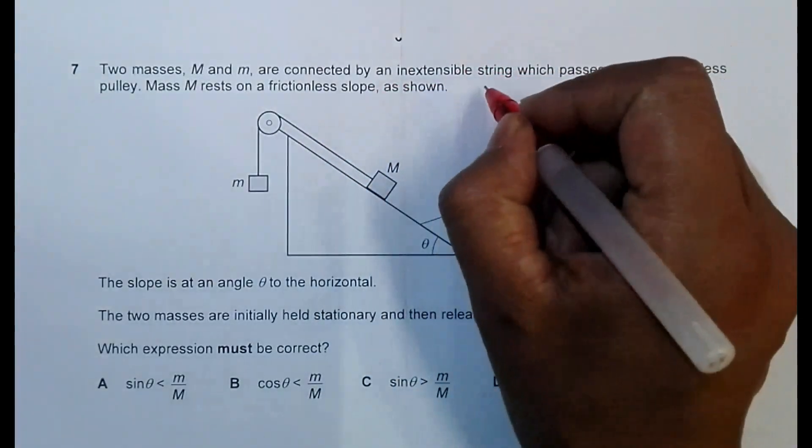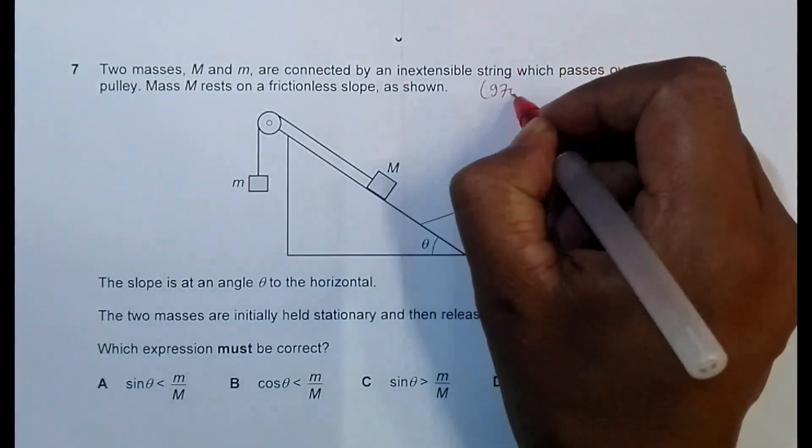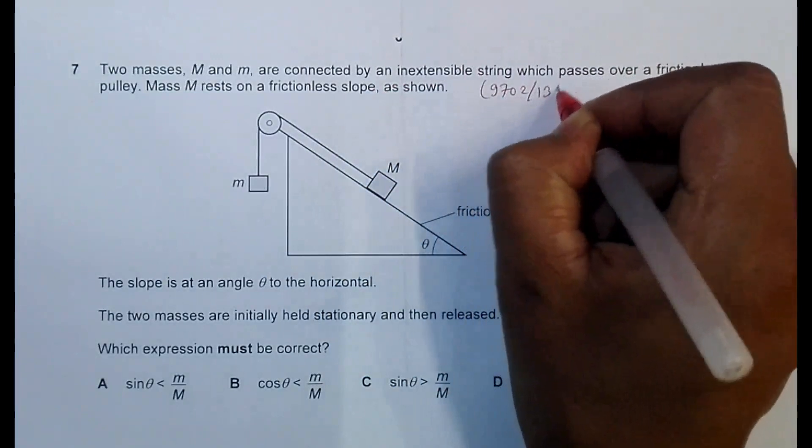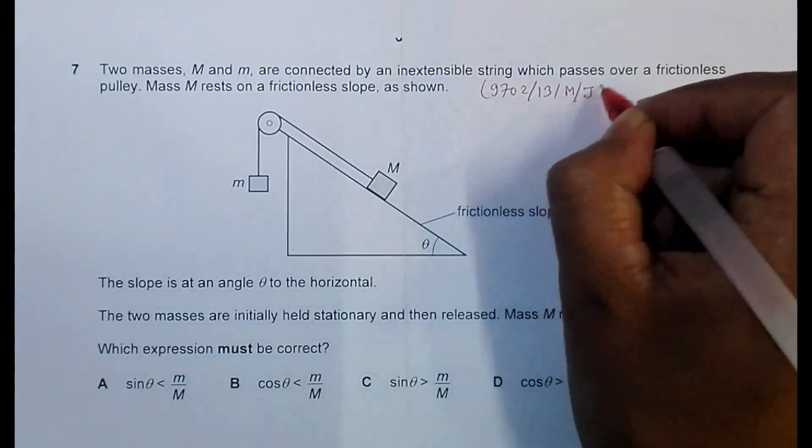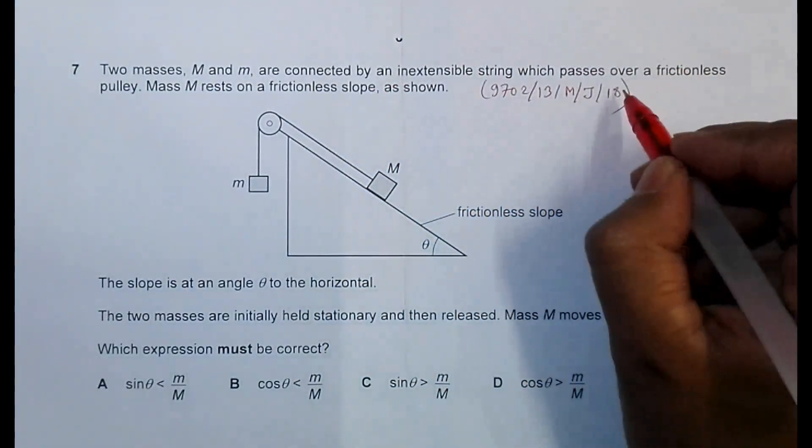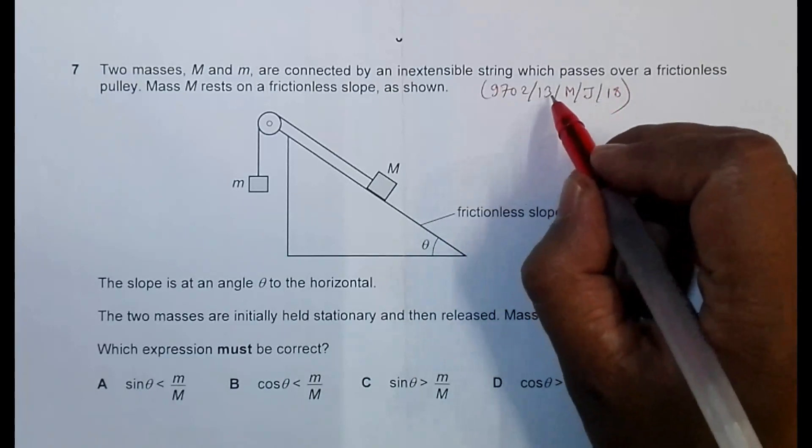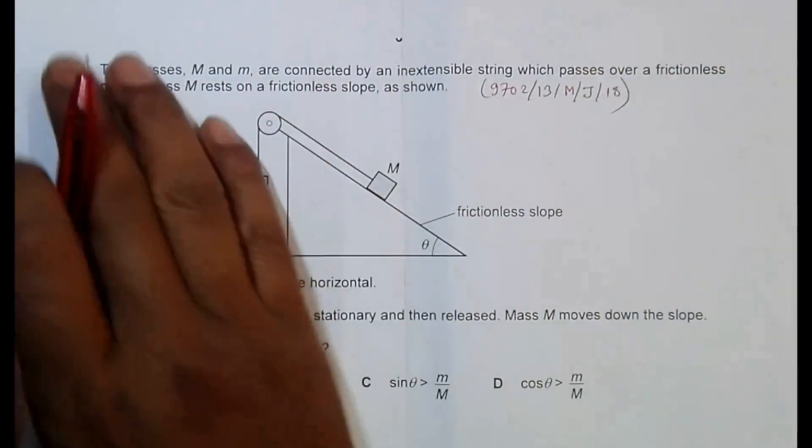Hello folks, this is again 970213MJ118. So it is 2018 May June paper 13 and the question number is 7.